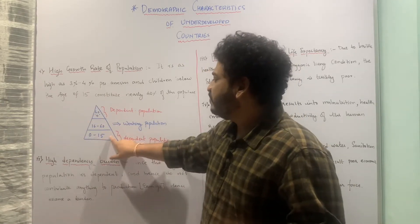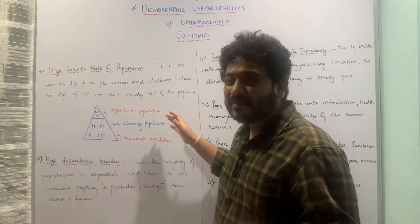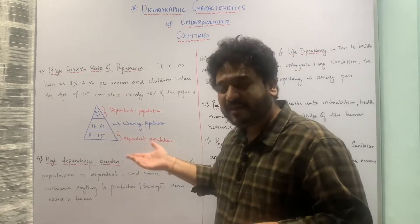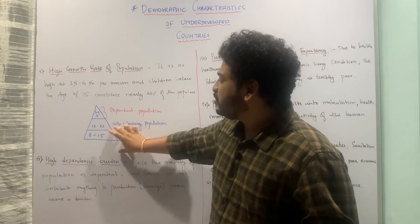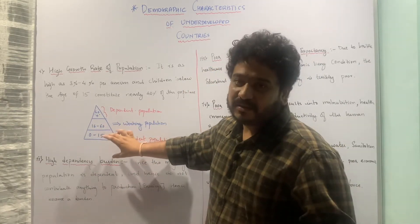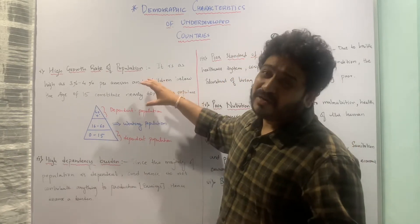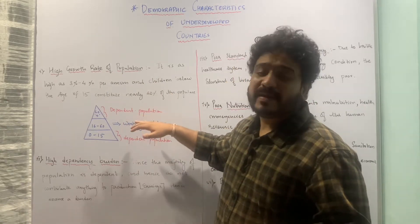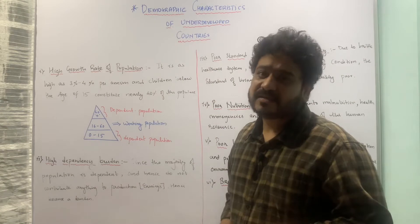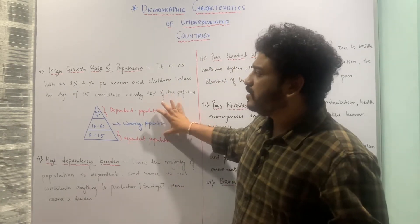When you look at the age pyramid or age profile, you have 0 to 15 years which is the dependent population, then 16 to 60 years which is the working or independent population, and then 60 plus which is again the dependent population. The majority of the populace falls in the 0 to 15 age group, and as a result the high growth rate of population is a trouble for most developing economies. This is why we study it as a characteristic of any underdeveloped or developing country.